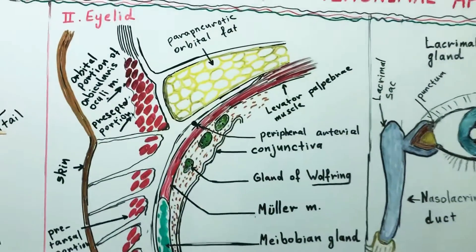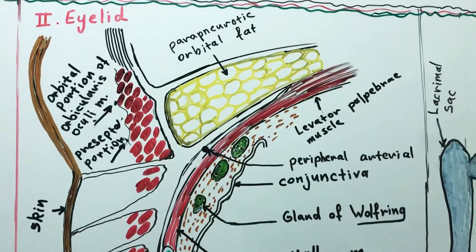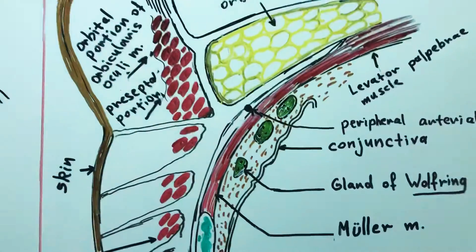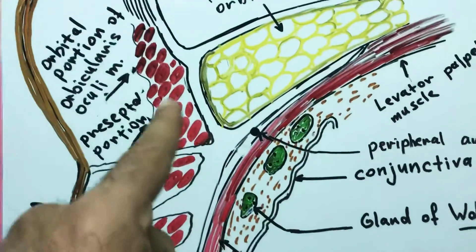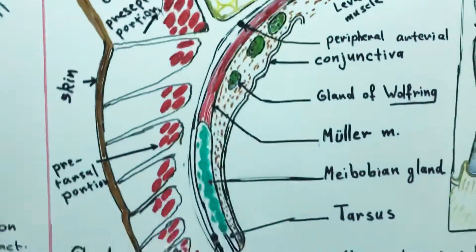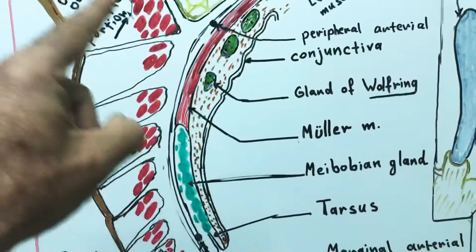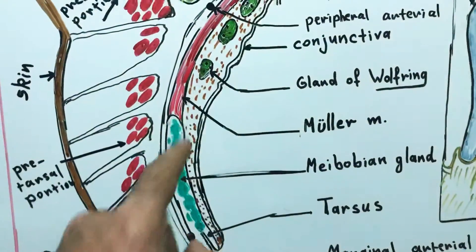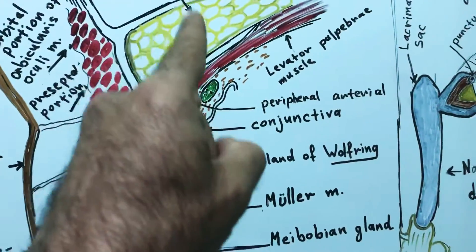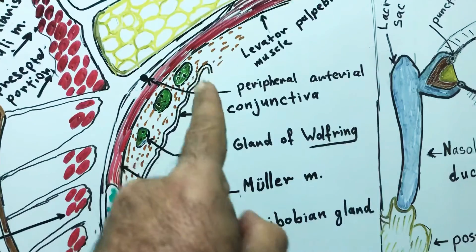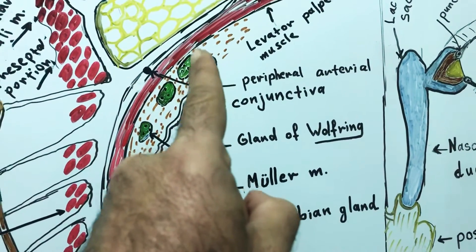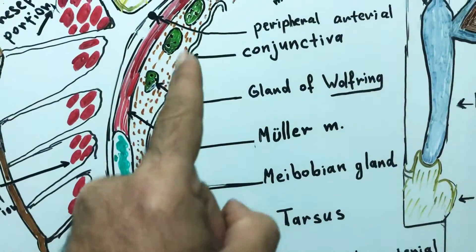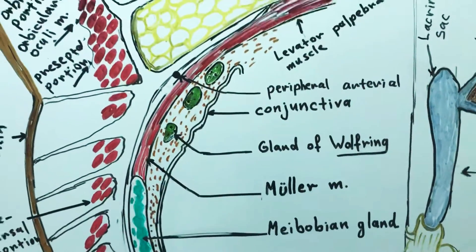Now, as functional anatomy of the eyelid, the eyelid is composed of six layers. From anterior to posterior, they are the skin, and subcutaneous tissue, the muscle layer, the tarsal plate, and the septal fiber, and the palpebral conjunctiva. The part of conjunctiva that is lining the eyelid.